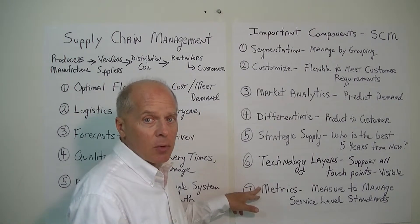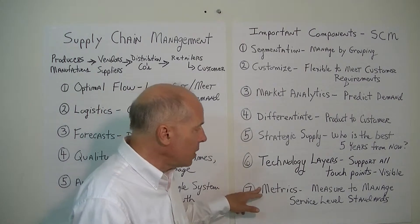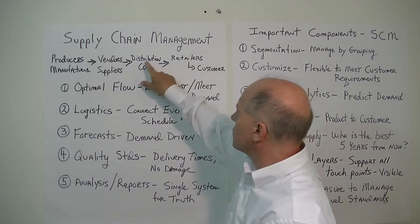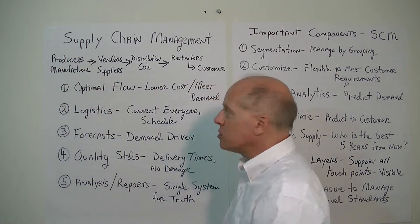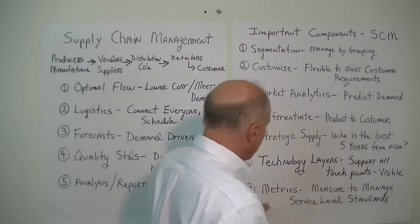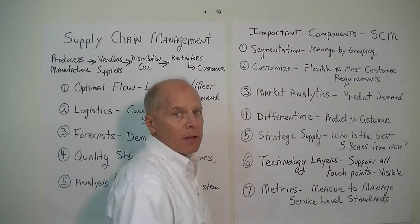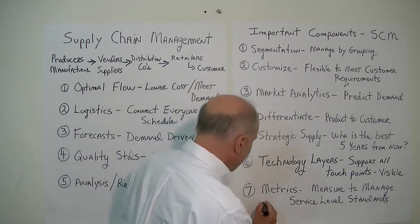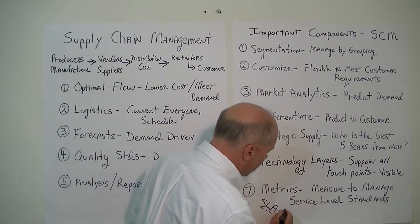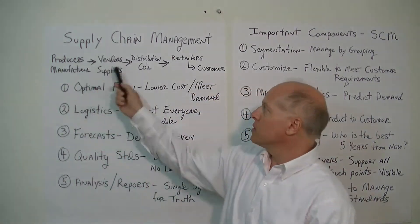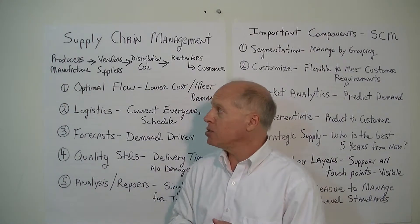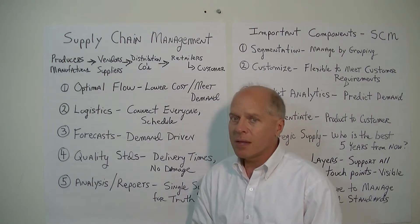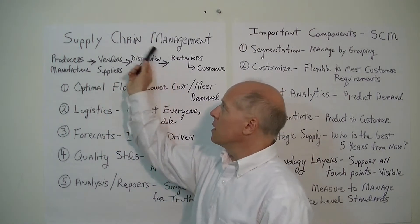We want to measure things to manage things. So we want standards for quality, turnaround time, cycle time, and delivery time. There should be service level standards for all the different players involved — retailers, distributors, suppliers, vendors, shippers — everybody held to some type of quality control standard, some metric, a service level standard. Metrics are definitely important and will be built into service level agreements, or SLAs. These standards and metrics are built into SLAs that all players must meet, and their compensation is often based on meeting those standards — with deductions if they don't.